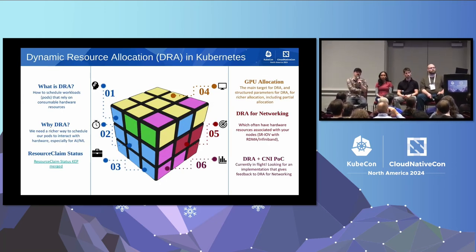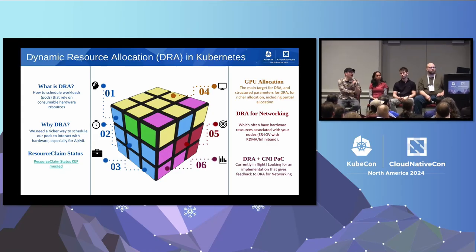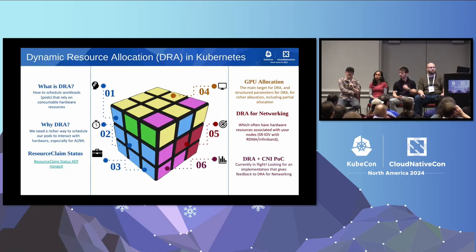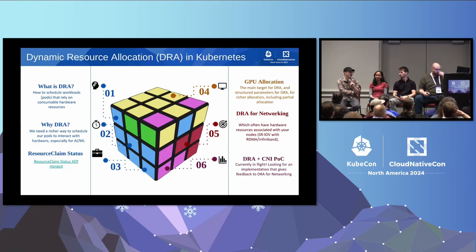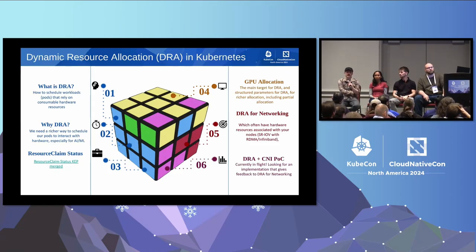Going a bit further, what relation does this have to networking? The AI ML trend is not going anywhere and Dynamic Resource Allocation is a train that has left the station. But in the networking world, we also have situations that require exhaustible resources.